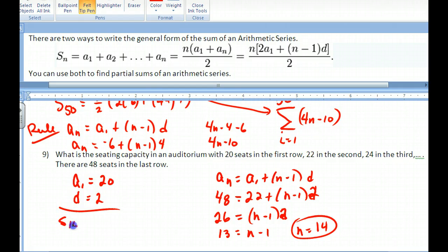With n equal to 14, now I can do my sum. So s sub 14 is equal to 14 over 2. Hey, I know my last term, so I can do my first term, which is 20, and then my last term, which is 48. And you can crank that out in your calculator to figure that one out. So in this case, I could use this formula because I do know the last term.